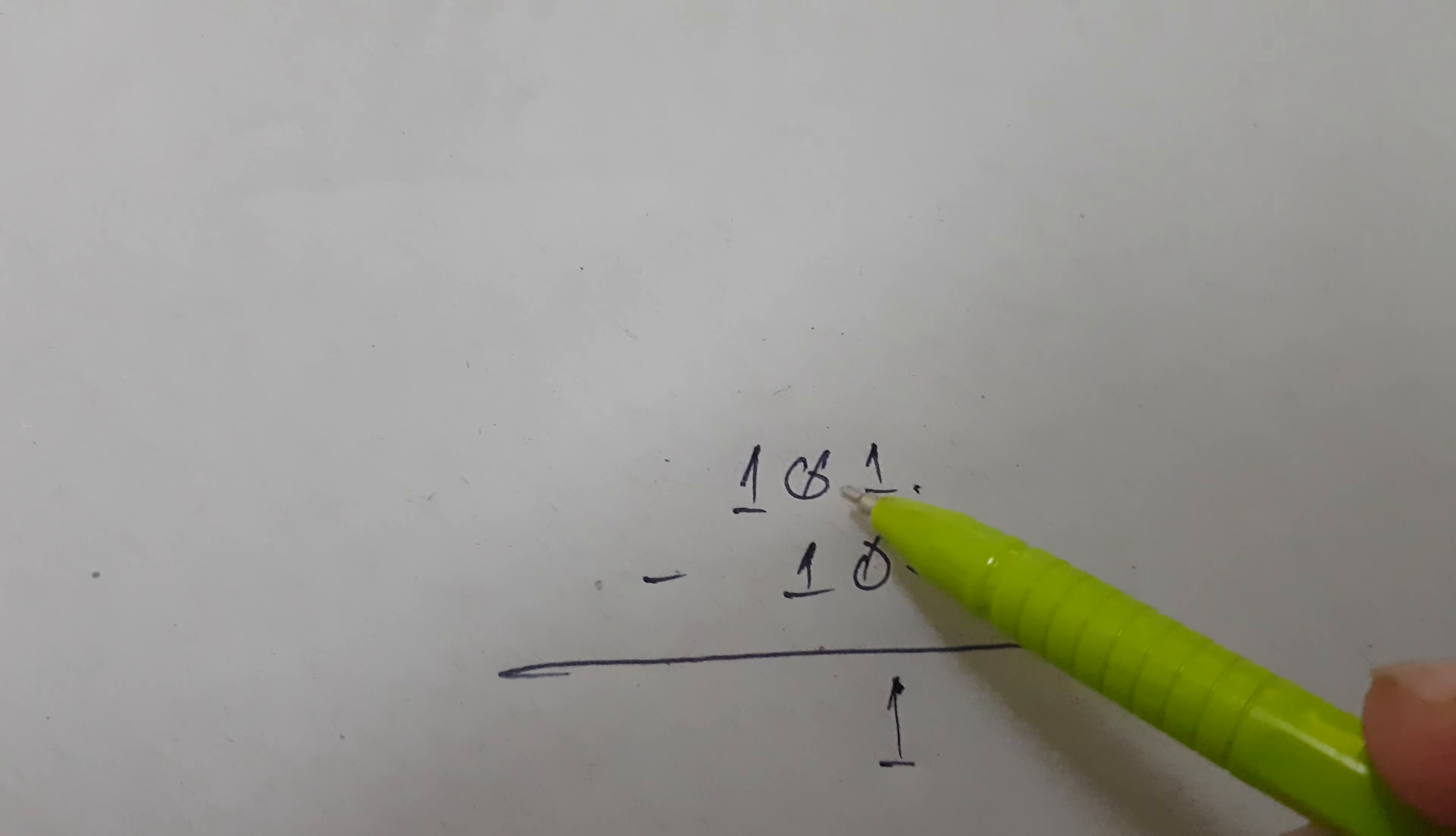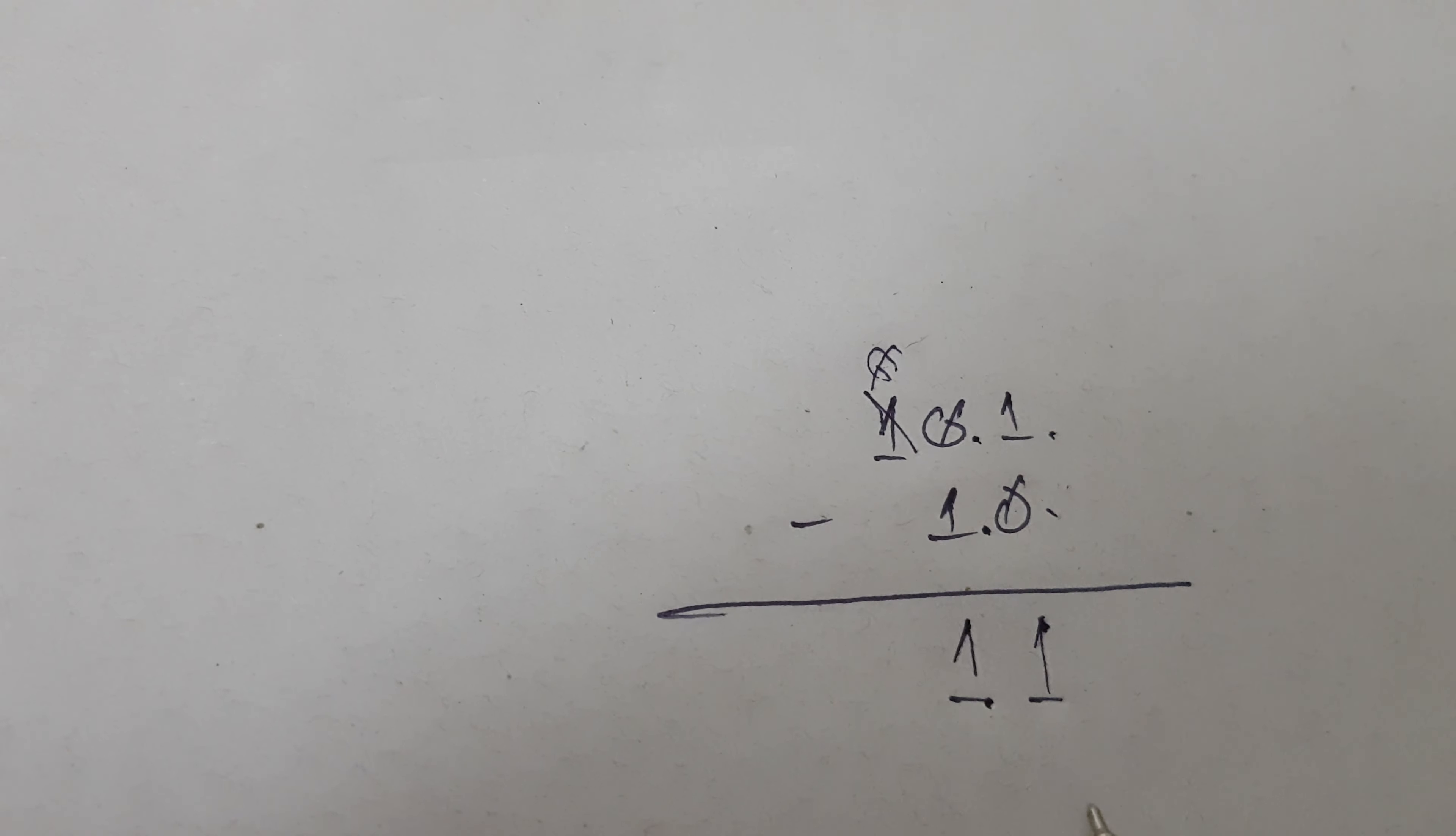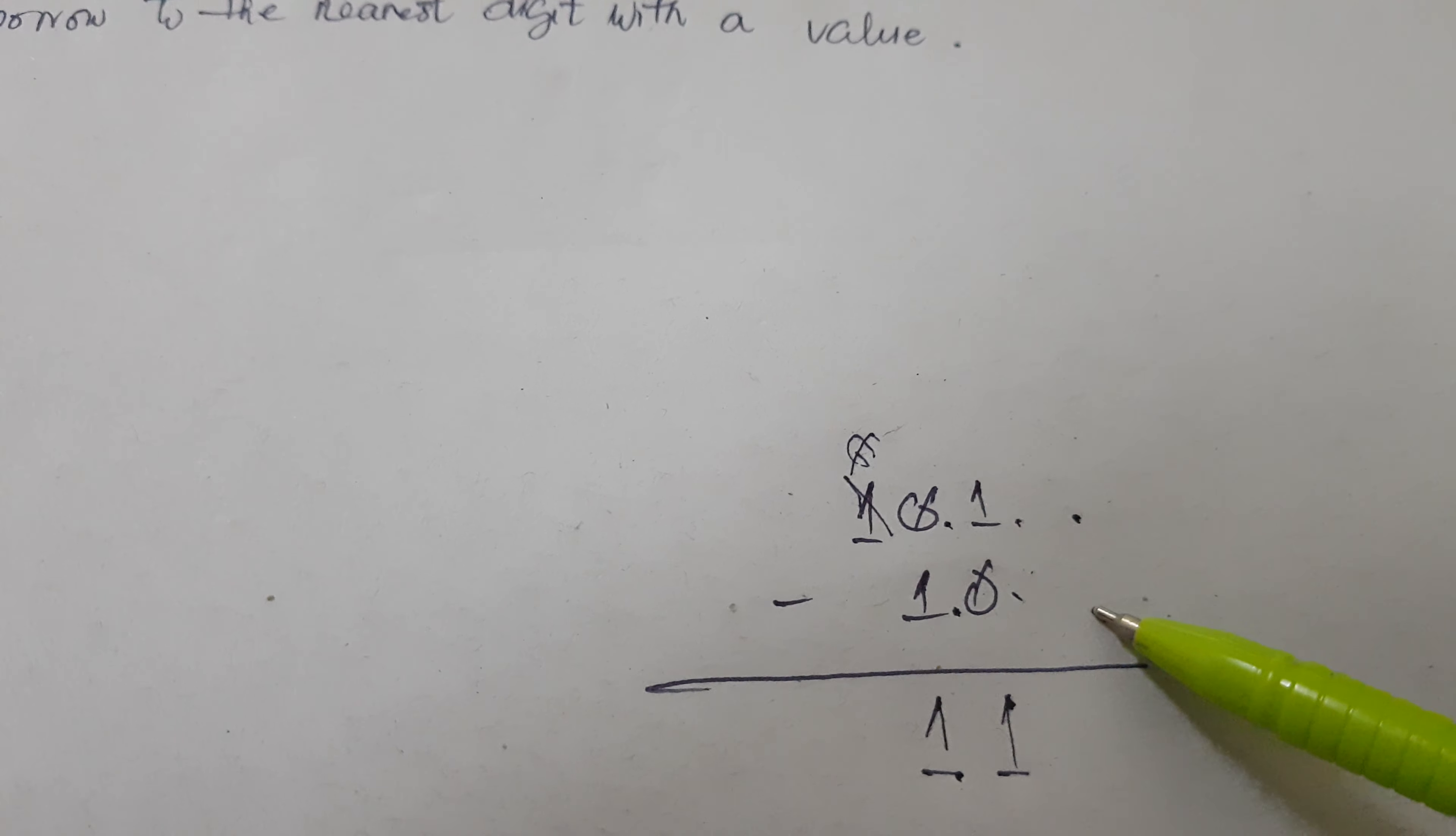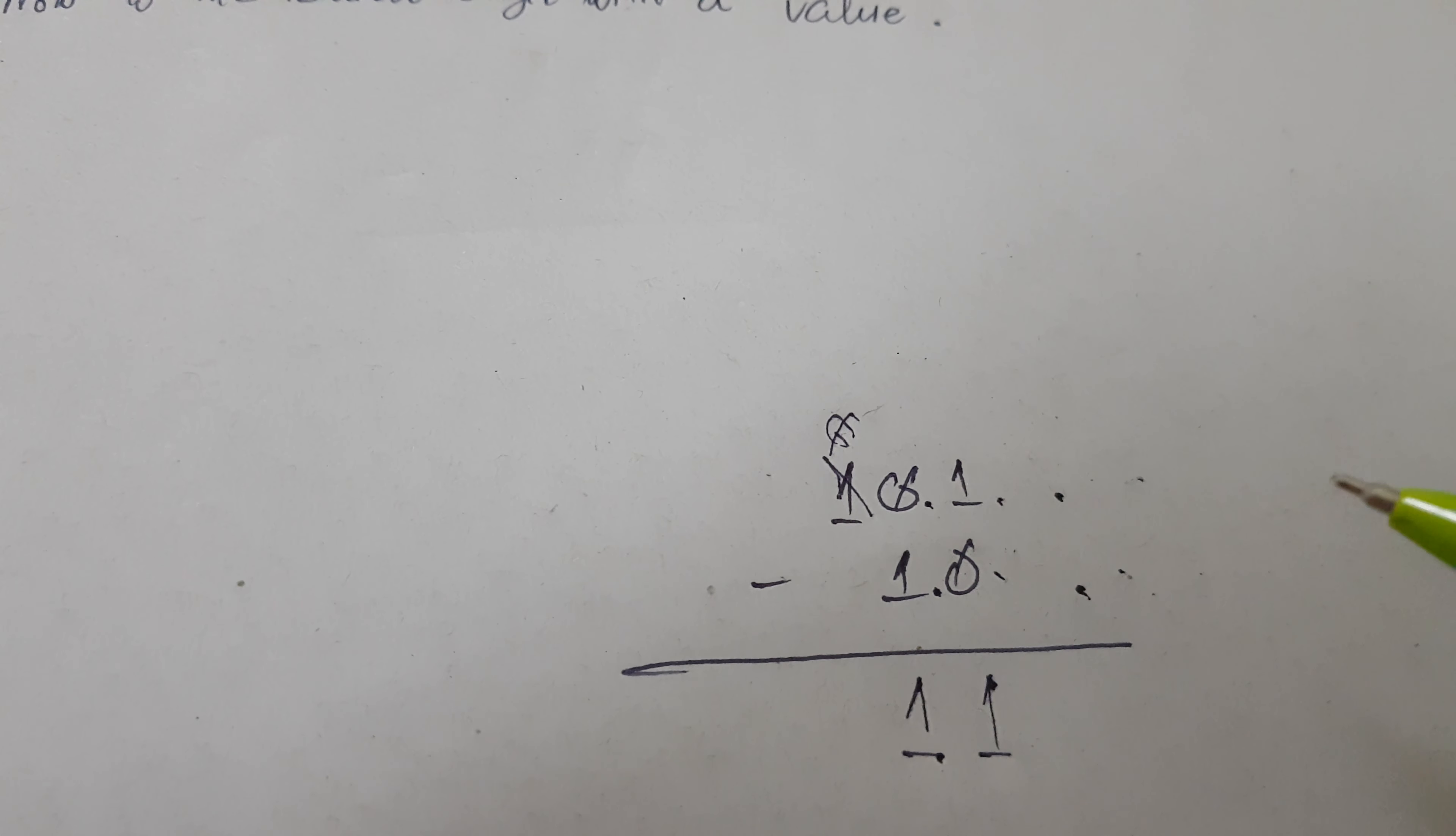Zero minus one equals one, and we borrow from one, so one now will become zero. So the answer is 11. One zero one is five, one zero is two, so it's five minus two.